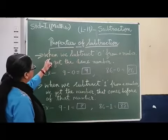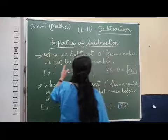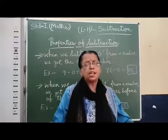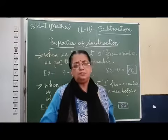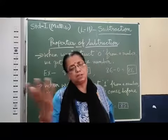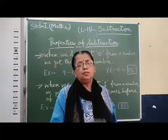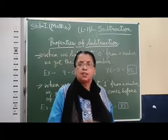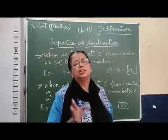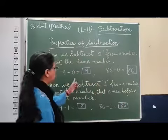What is that? When we subtract zero from another number, we get the same number. This is one property. Whatever may be the number — maybe it is one, maybe it is hundred, maybe it is thousand, maybe it is a crore — whatever may be the number, if you subtract zero from that number, you will always get the same number as the result. I have given two examples.